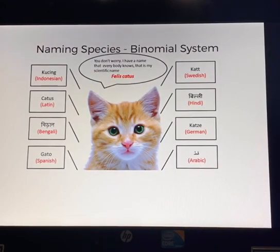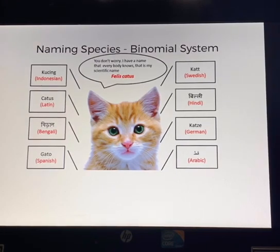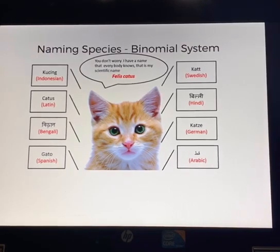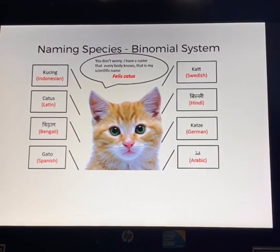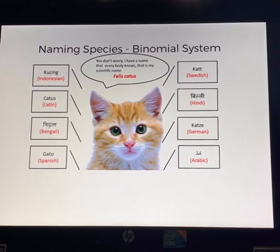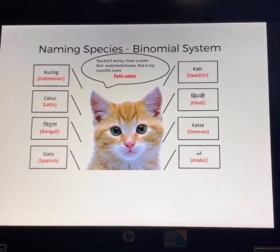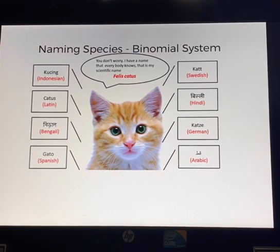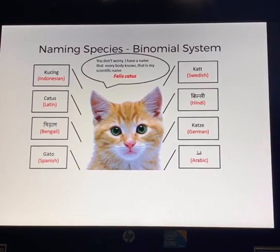What is the difference between common names and scientific names? Common names are names that are used locally, which change from one country to another, from one language to another. The scientific name is the specific and unique name which identifies and describes the species.